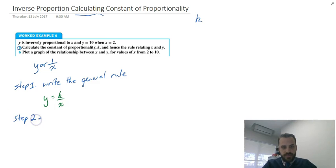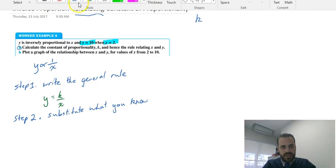Step two: substitute what you know. So what do I mean by substitute what you know? Let's look at question A again. Calculate the constant of proportionality and hence the rule relating x and y. First sentence: y is inversely proportional to x and y equals 10 when x equals 2. Those are the things I know. So I know that y equals 10 and I know that x equals 2, so I can substitute them in.